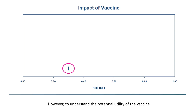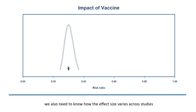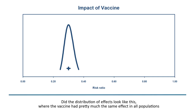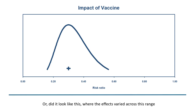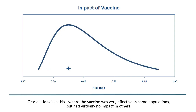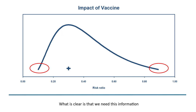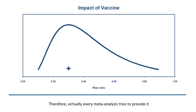However, to understand the potential utility of the vaccine, we also need to know how the effect size varies across studies. Did the distribution of effects look like this, where the vaccine had pretty much the same effect in all populations? Or did it look like this, where the effects varied across a wider range? Or did it look like this, where the vaccine was very effective in some populations but had virtually no impact in others? What is clear is that we need this information, and therefore virtually every meta-analysis tries to provide it.